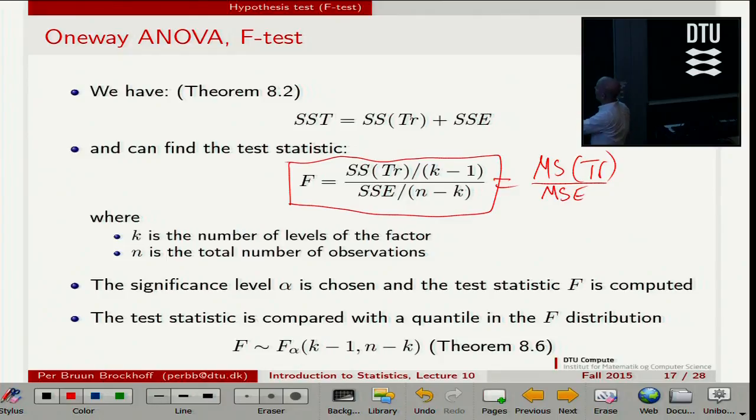When it is done exactly like this, I mean standardizing with K minus 1 and N minus K like this, it turns out that when there is no group difference, so now we do the hypothesis test thinking. The hypothesis is no difference between the groups. The question is how large should this f be? Since the SS treatment, the one that measures group difference,